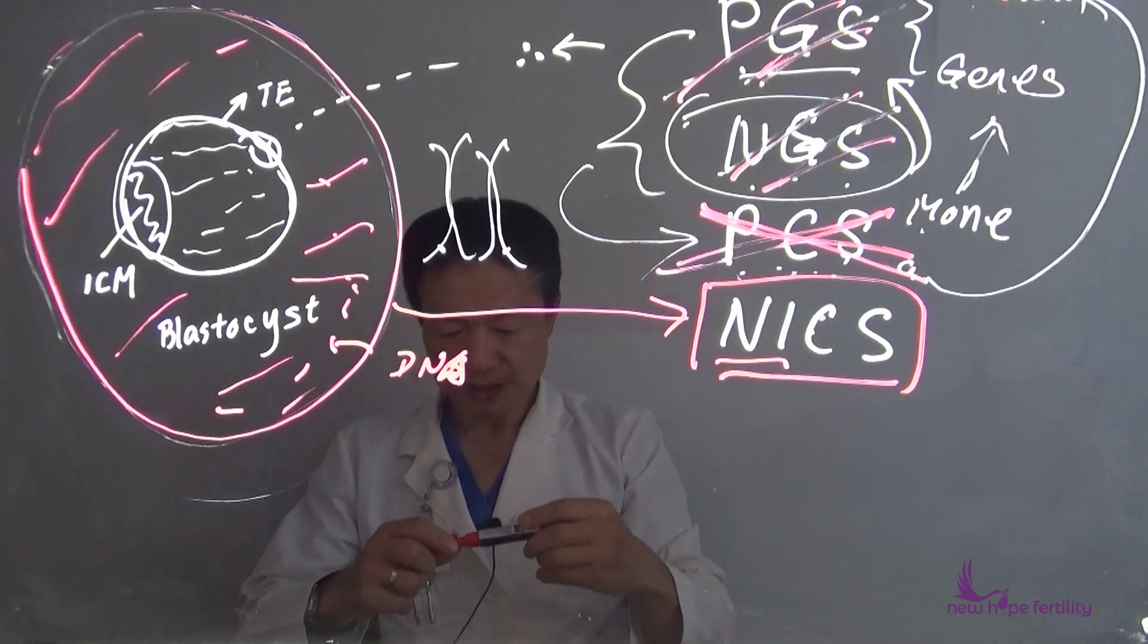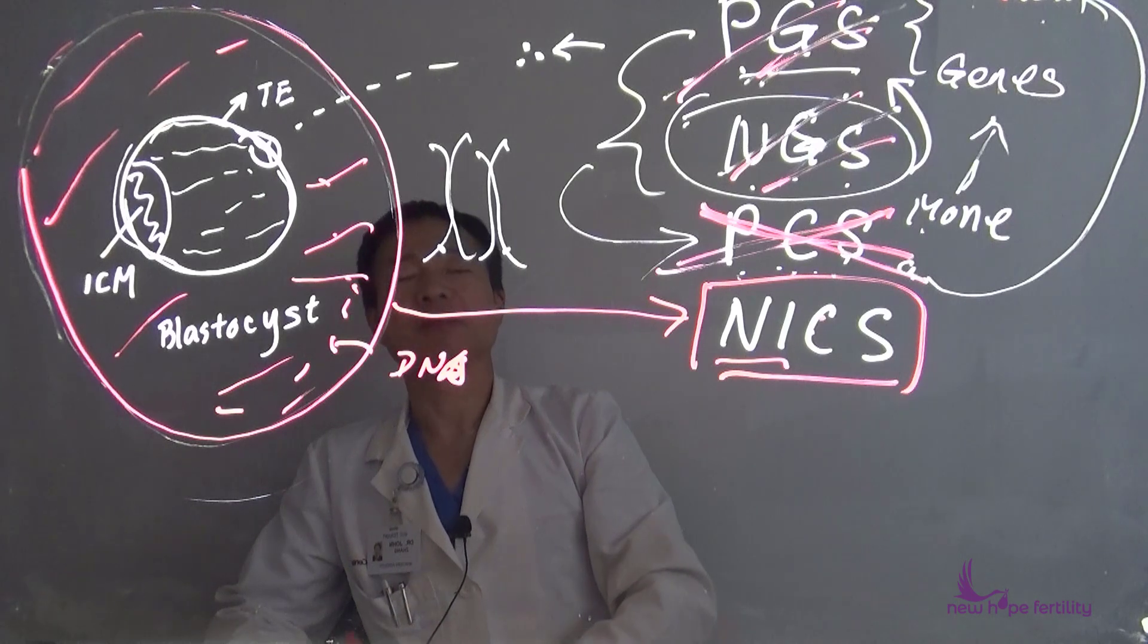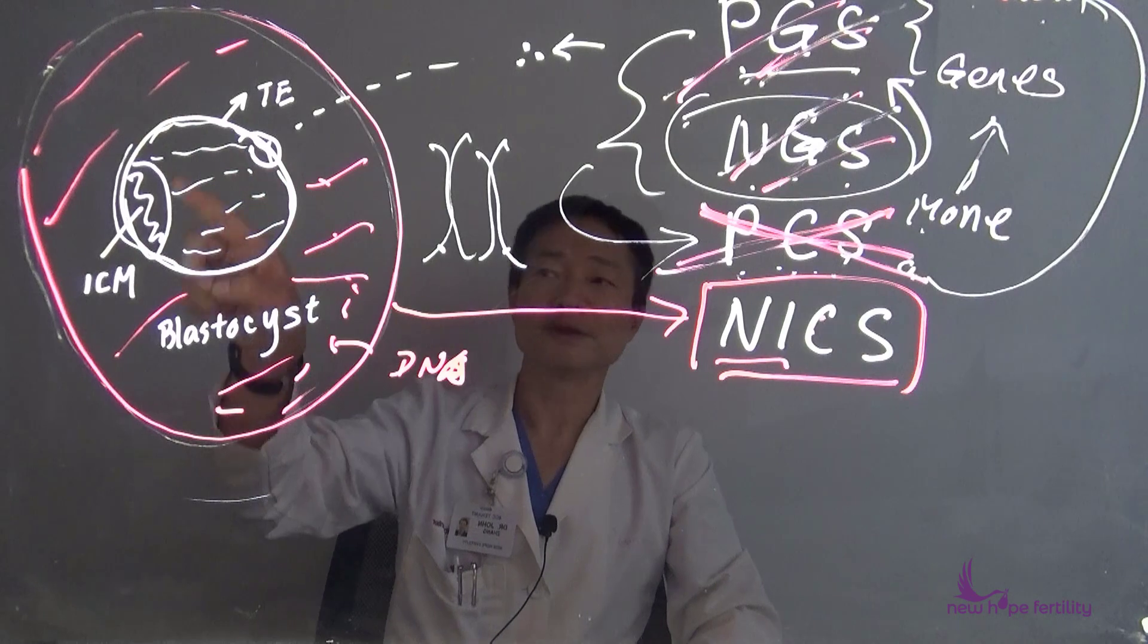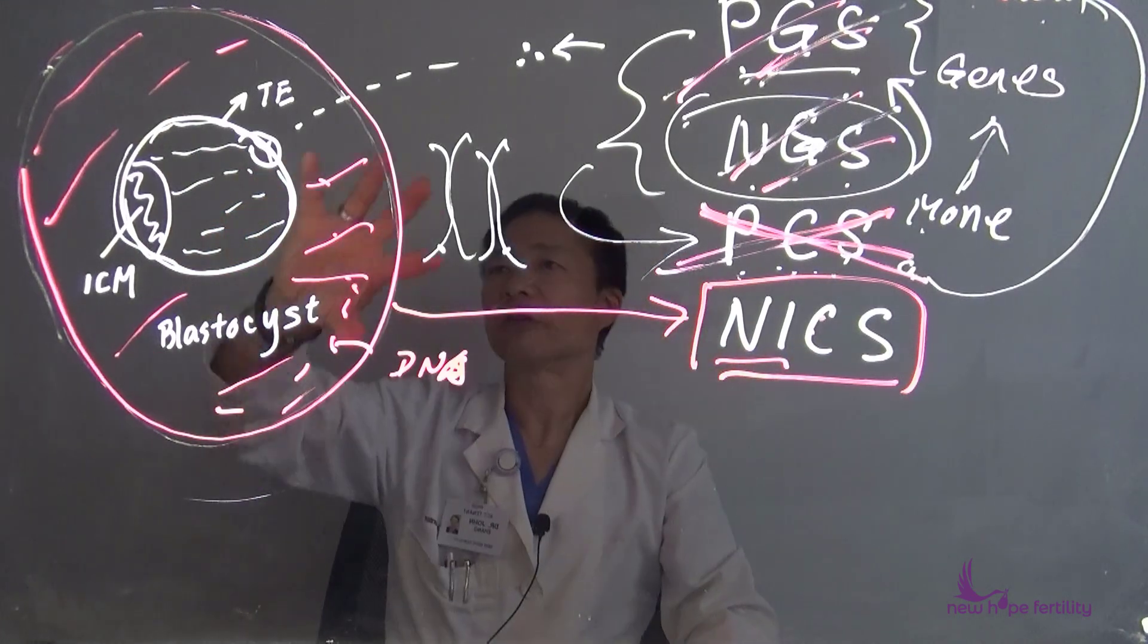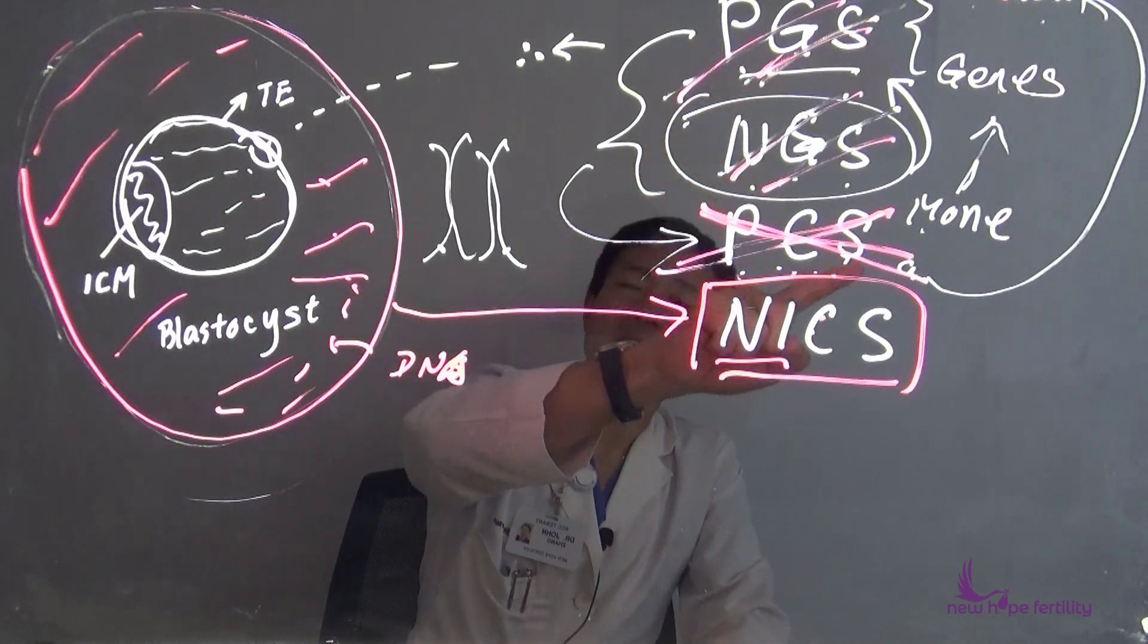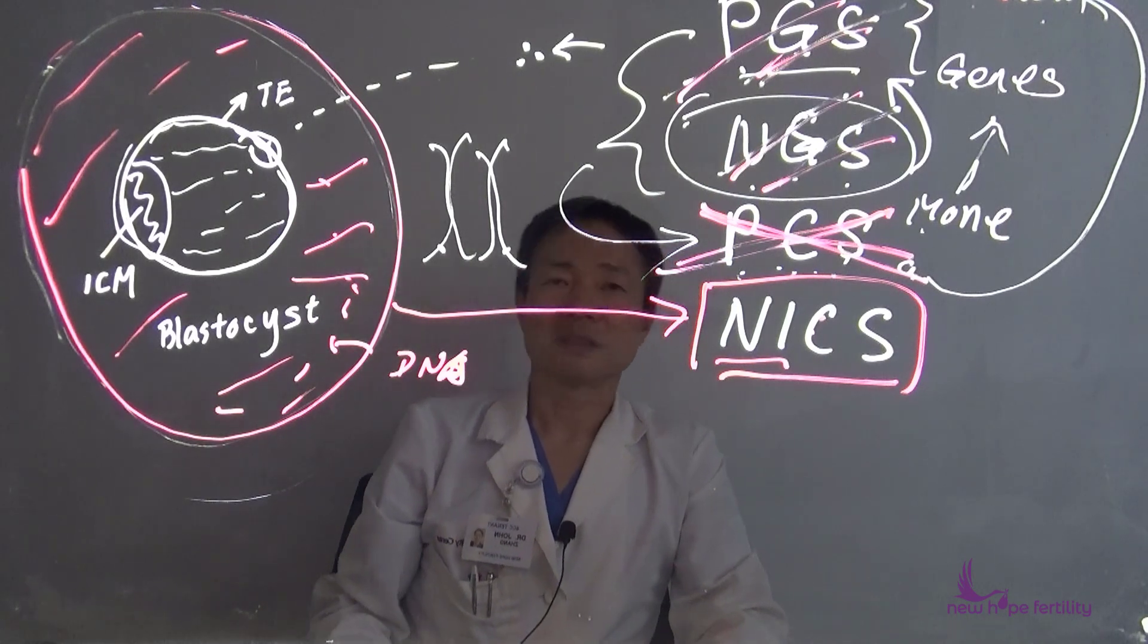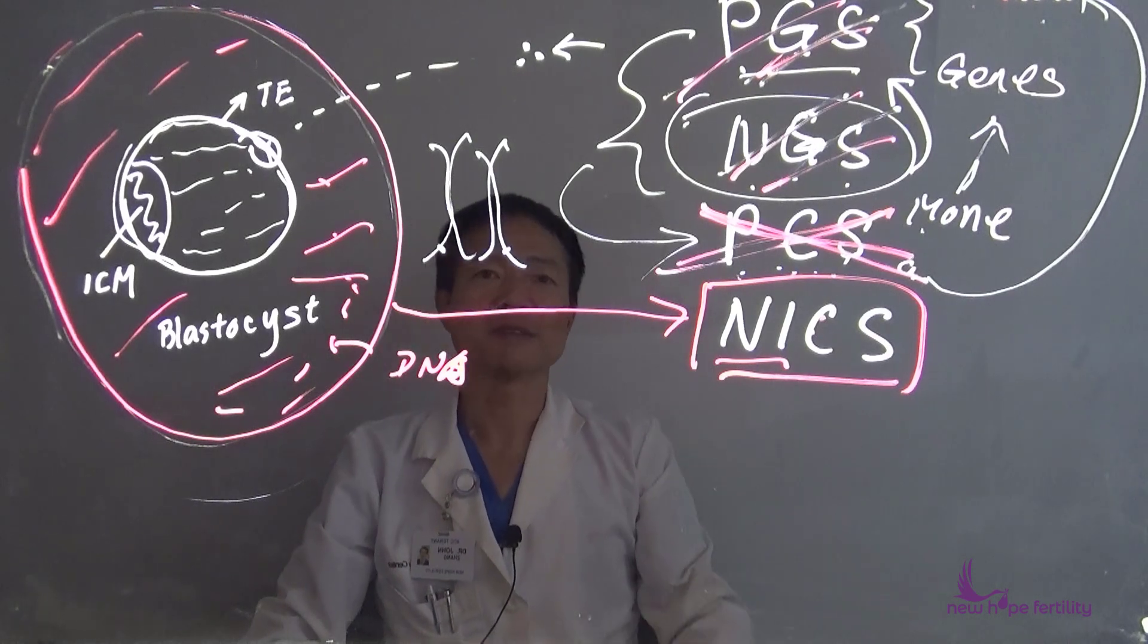And we're using NICS. It's non-invasive. The advantage of this test is that it will not damage the embryos and gives more sensitive results because this DNA comes from the whole cells, not just from three cells. So information you gain from a whole embryo with traditional PGS, NGS, PCS are getting from very few cells, so the results are still not very conclusive from time to time. This is a very exciting new technology.